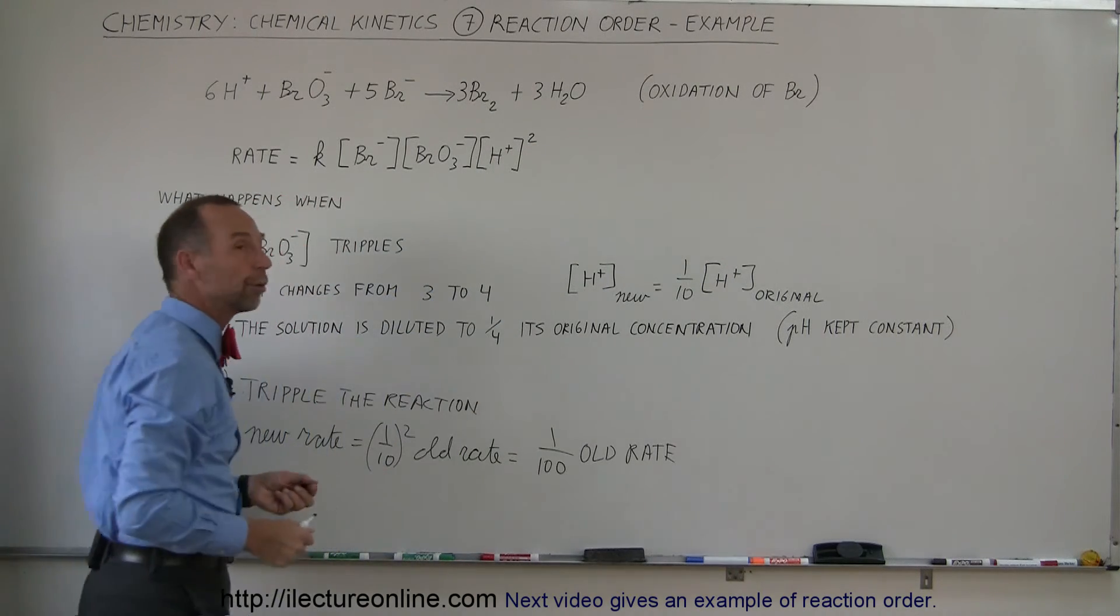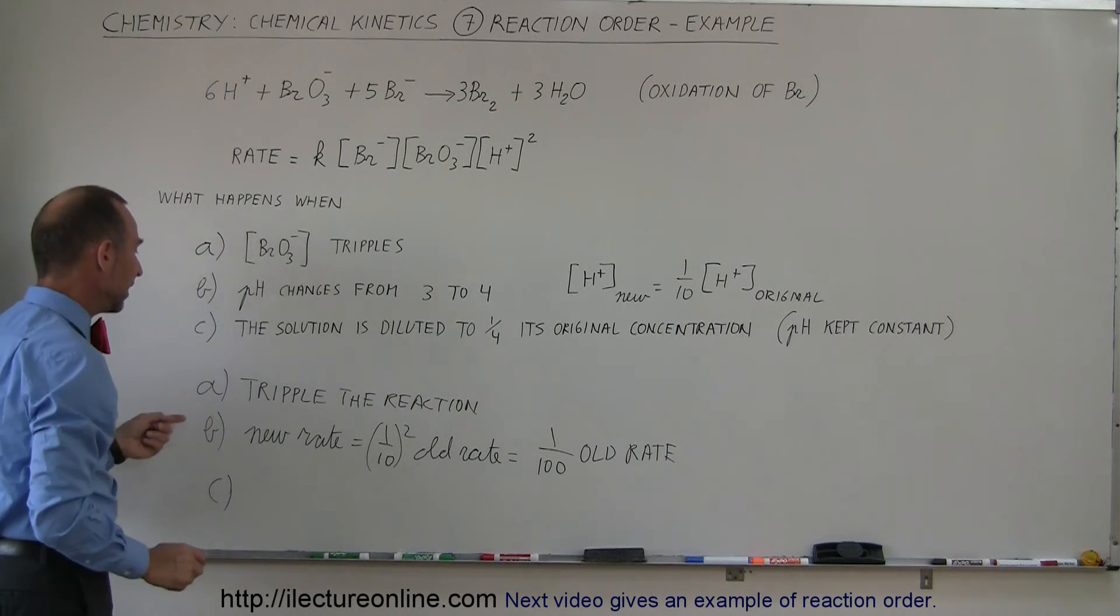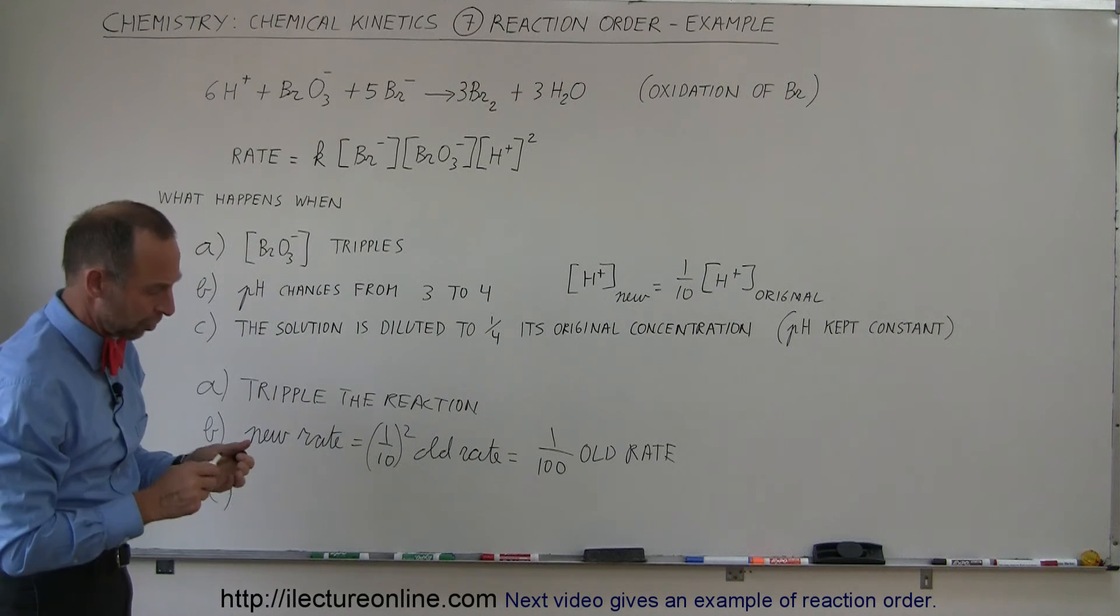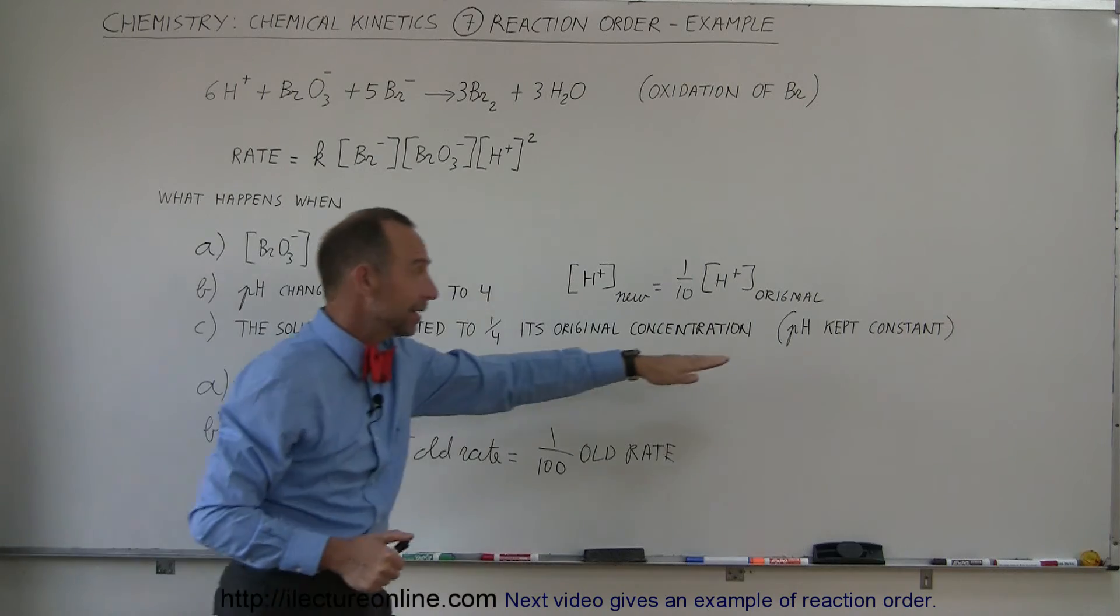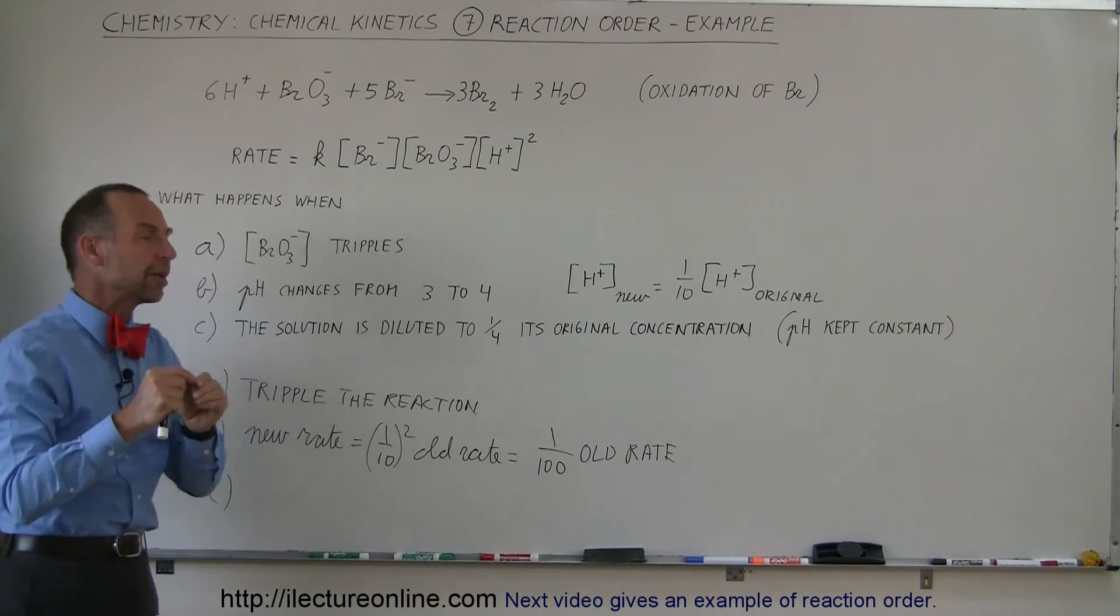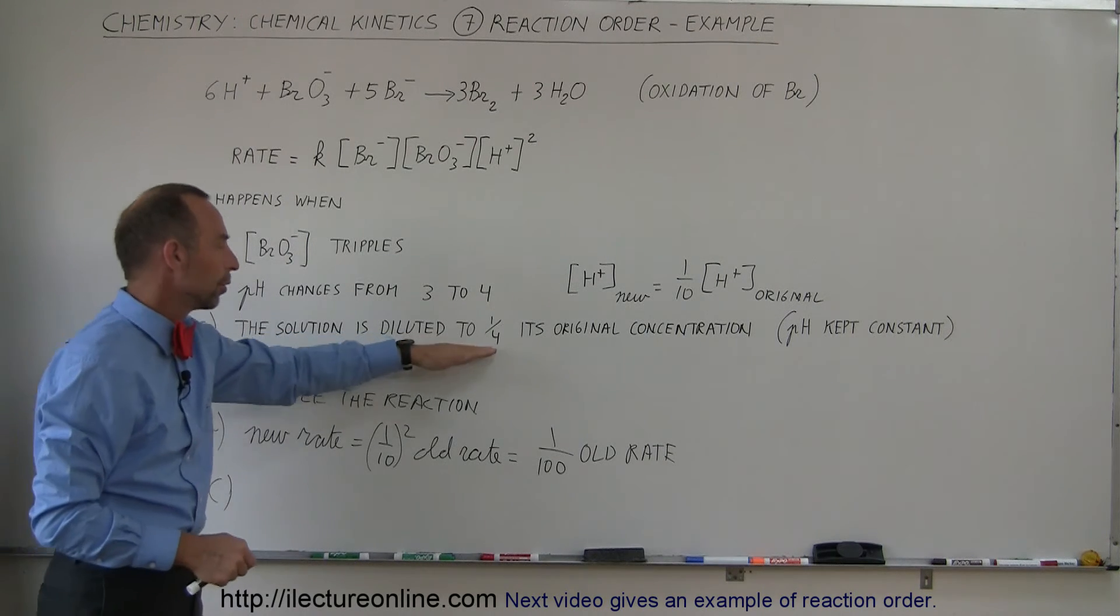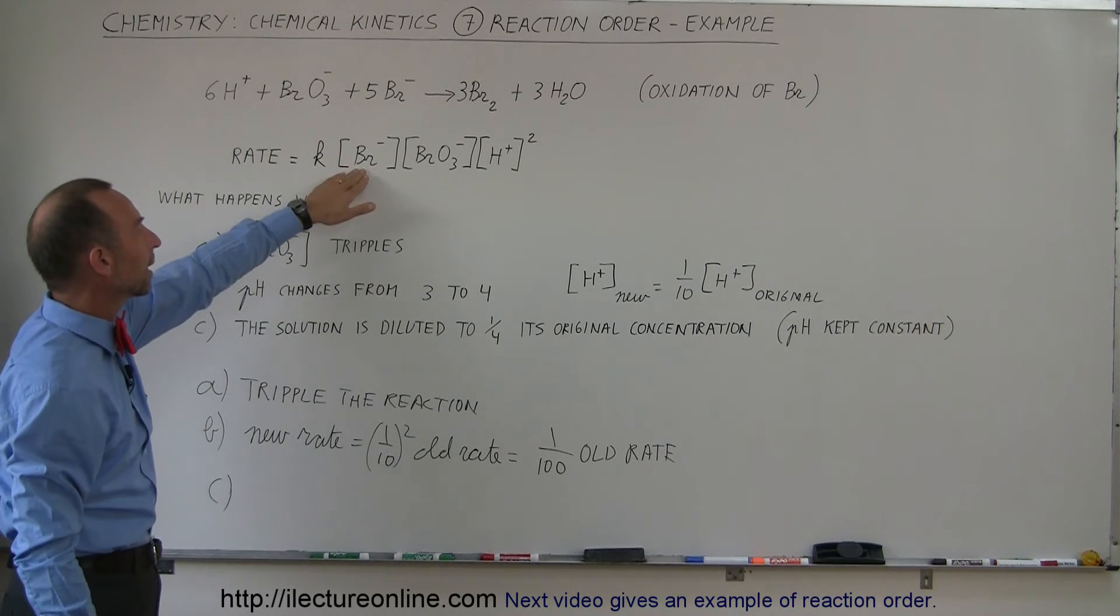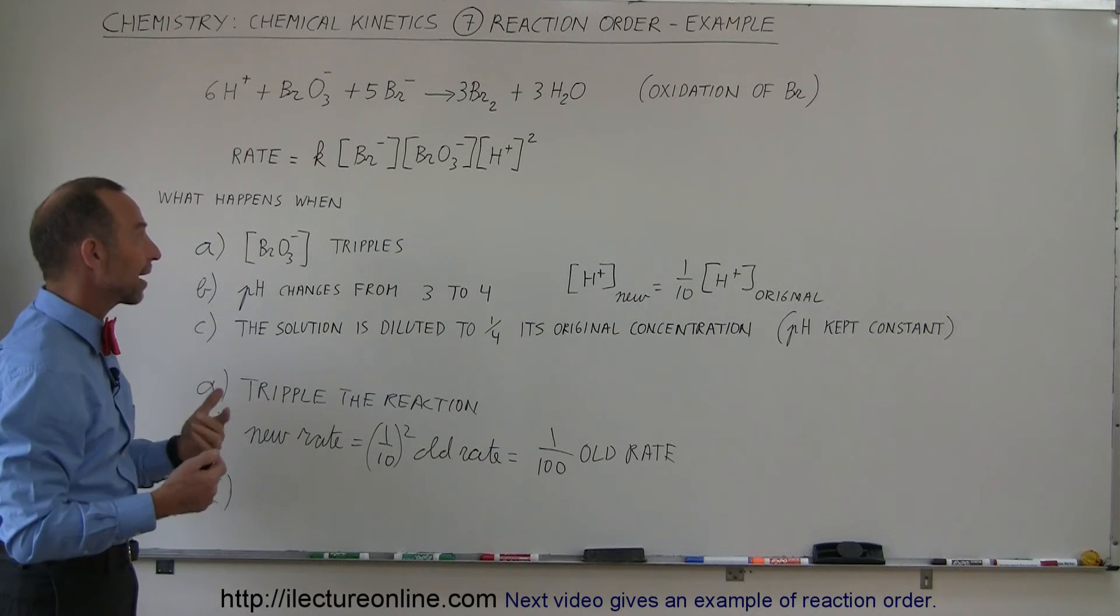And then finally, going to part C, let's say now that the solution is diluted to 1/4 its original concentration. All right, if we dilute, oh, and by the way, we keep the pH the same. So we put a buffer in it, we keep the pH the same, but we're reducing the solution to 1/4 its original concentration, which means that both the bromine ion and the bromate ion both reduce in concentration by factor 4.